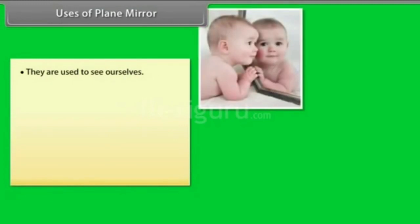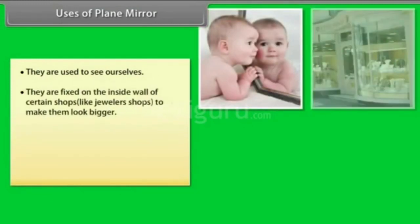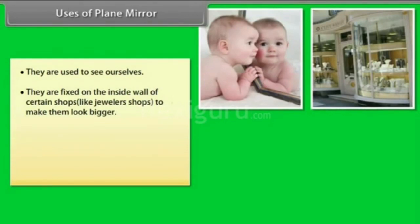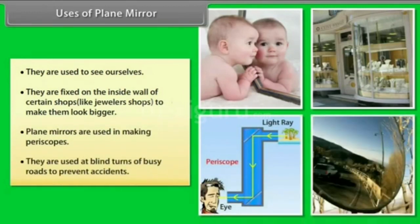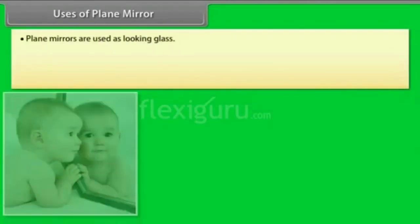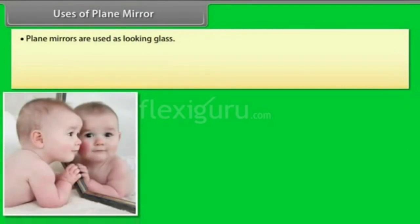Uses of plane mirrors: They are used to see ourselves. They are fixed on the inside wall of certain shops, like a jeweller's shop, to make them look bigger. Plane mirrors are used in making periscopes. They are used at blind turns of busy roads to prevent accidents.